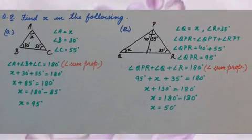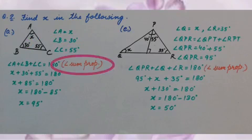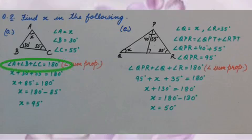A part. If we observe the figure, angle A is given as X, angle B is 30 degrees, and angle C is 55 degrees. Because we are talking about all three angles of a triangle, we will use angle sum property to find the unknown angle. Angle sum property says angle A plus angle B plus angle C equals 180 degrees.